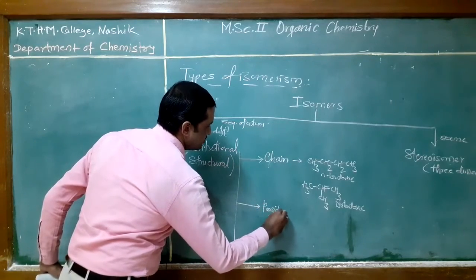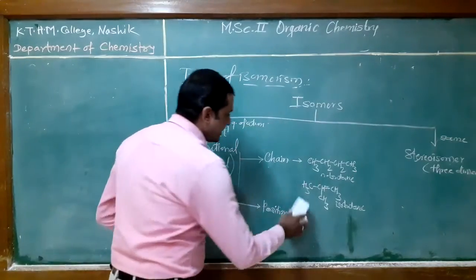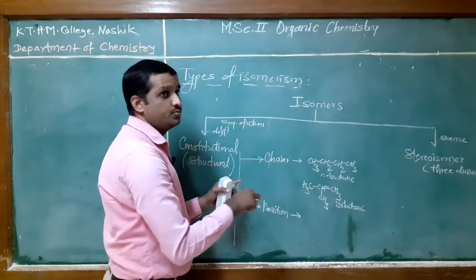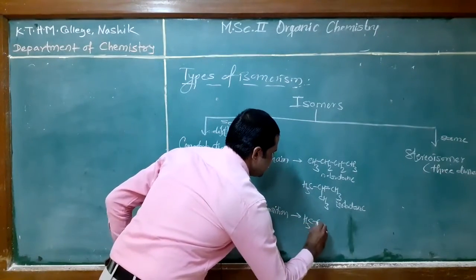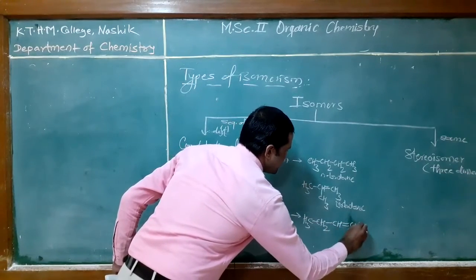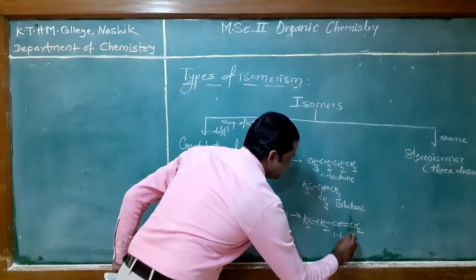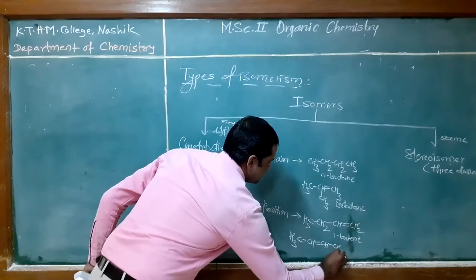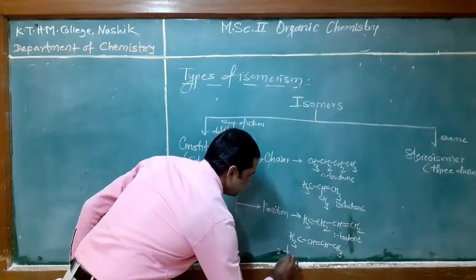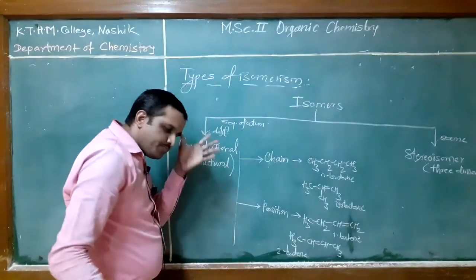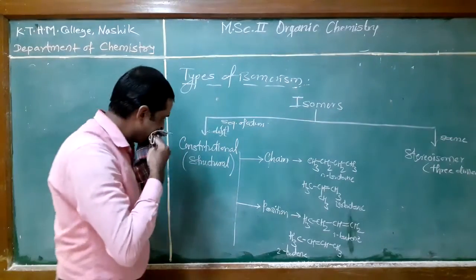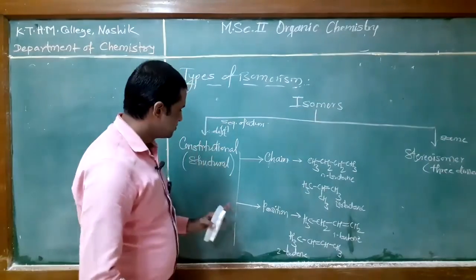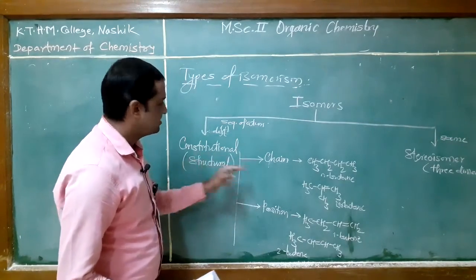The second category of constitutional isomerism is position isomers. In position isomers, the position of a particular atom or functional group in the chain is different. For example, CH3CH2CH=CH2 is 1-butene, and CH3CH=CHCH3 is 2-butene. In both isomers the functional group is an alkene, but its position is at C1 in the first case and C2 in the second. This is the second type of isomerism in constitutional isomers.